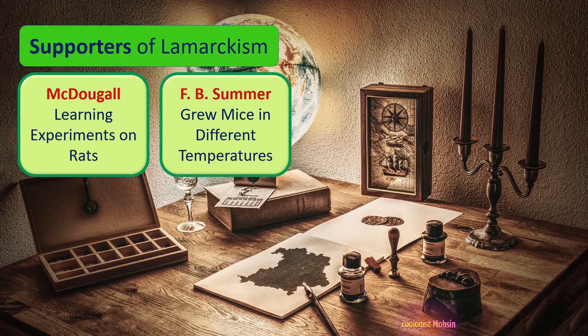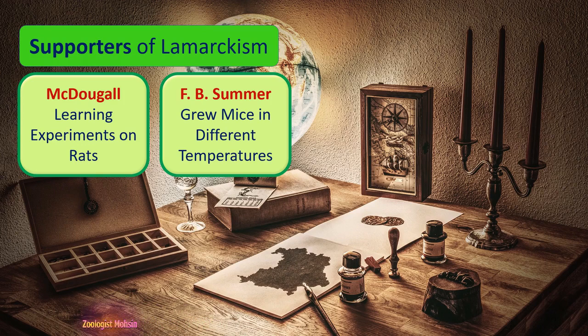The second supporter was F.B. Sumner. He grew mice at temperatures from 20 to 30 degrees centigrade and noted that the tail and body of the mice became elongated. When those mice were bred and their offspring were kept in normal or low temperature conditions, their body size and tail were normal. He concluded that if environmental conditions change, organisms change accordingly, and he also supported Lamarckism.